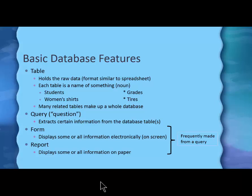A second feature of a database is a query, which just means question — in British English, that is the word they use for question. A query lets you get certain information from the database instead of getting everything. Two other items are forms and reports. They're the same thing except a form displays on the screen electronically and a report is intended to print on paper. Frequently, you make a query to get the information from the database and then create the form or report, or both, from the query.